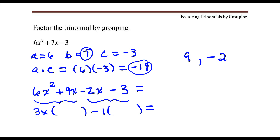So if we factor 3x out of these first two terms, that leaves me with 2x plus 3. Then factor negative 1 out of these last two terms, that leaves us with 2x plus 3.